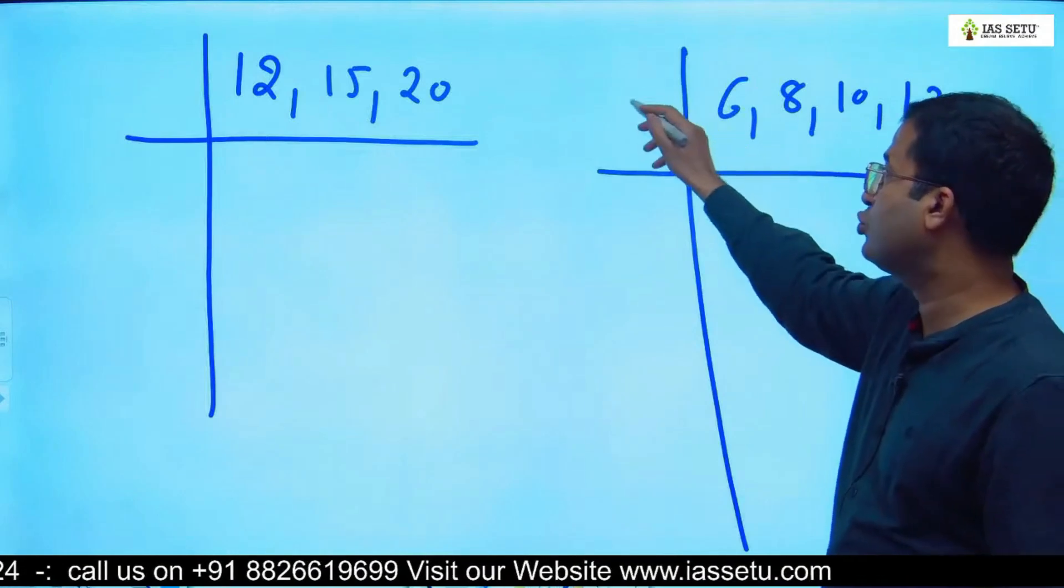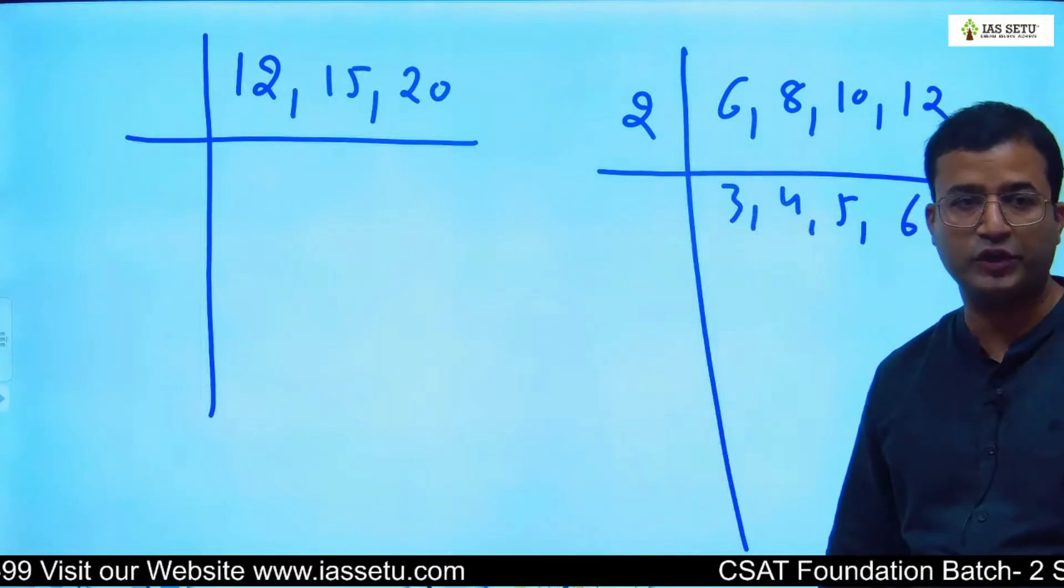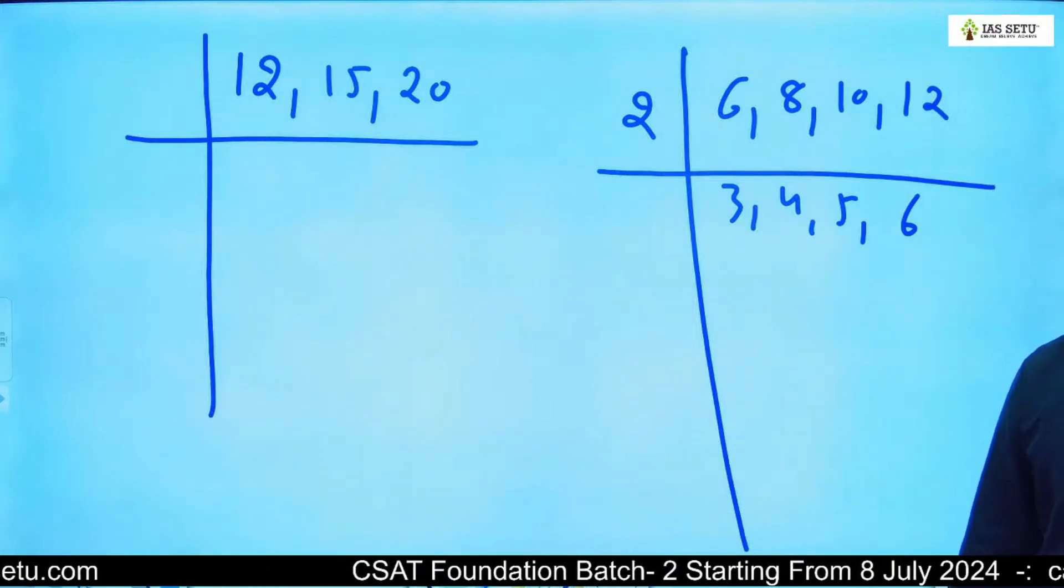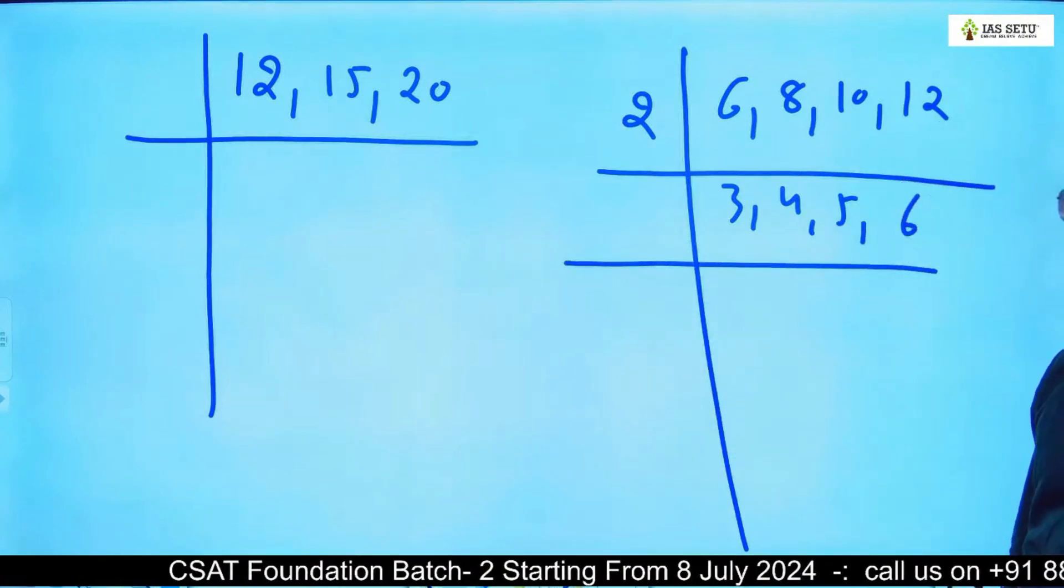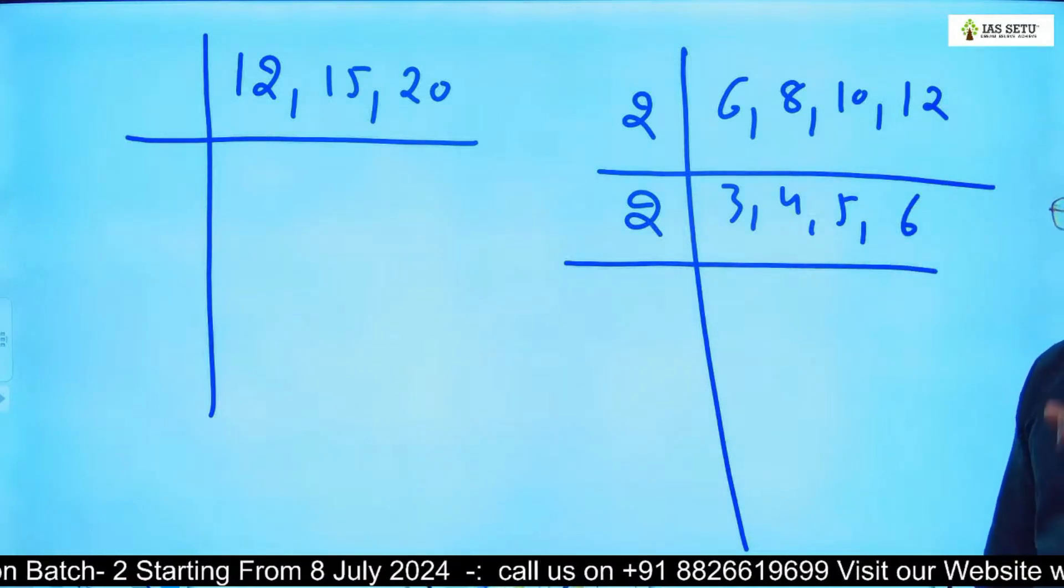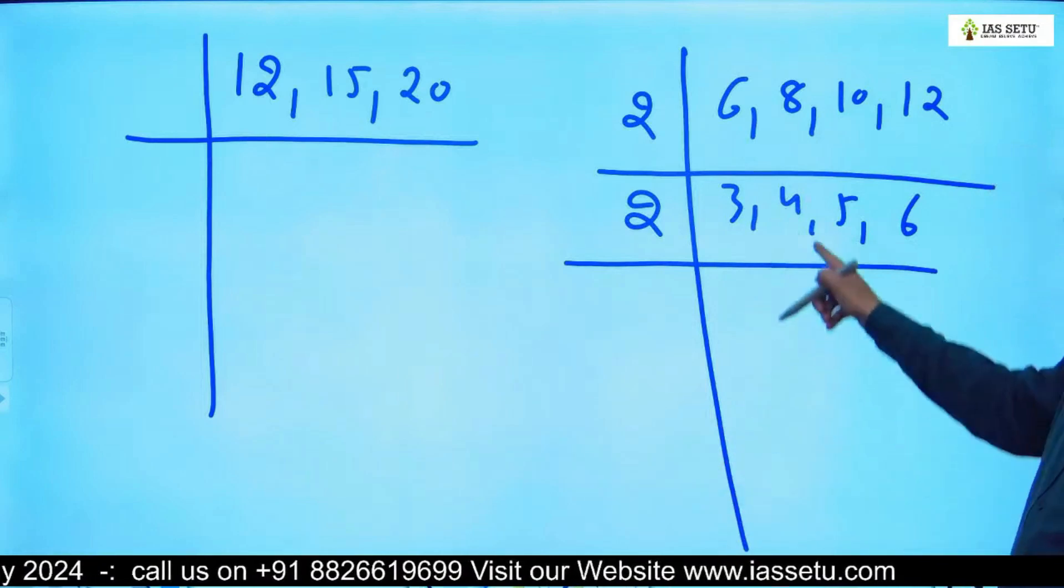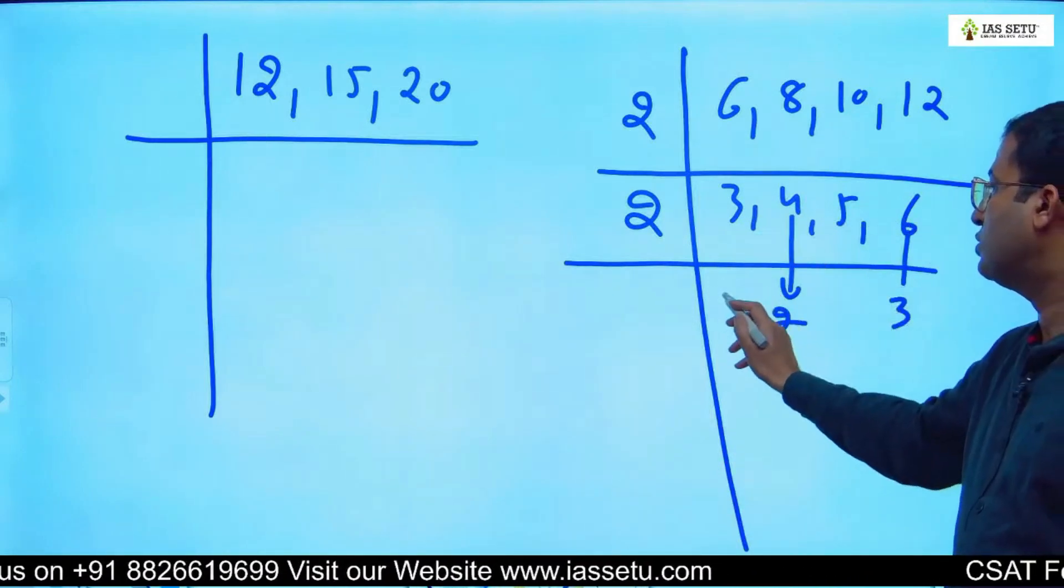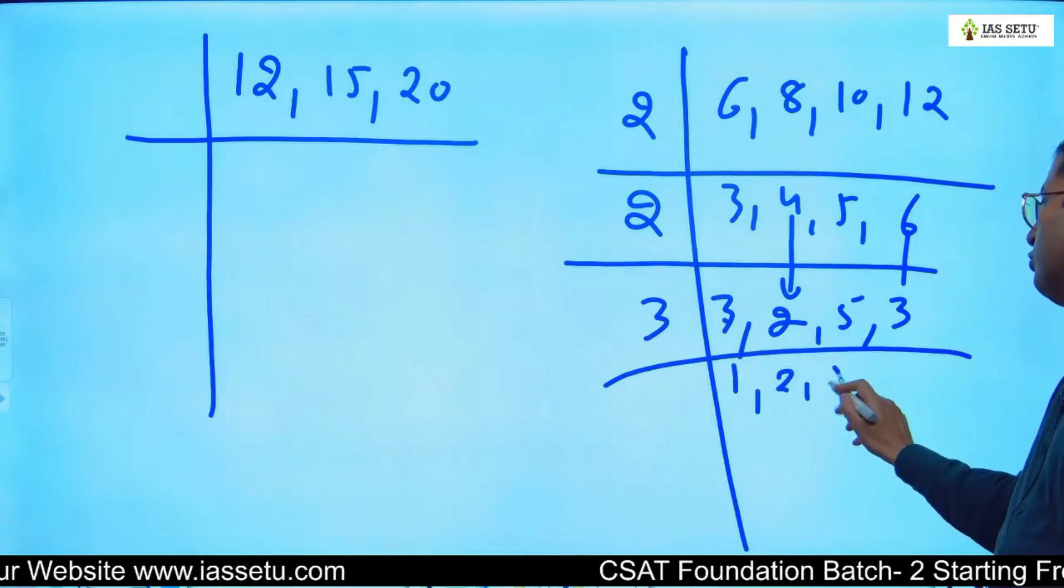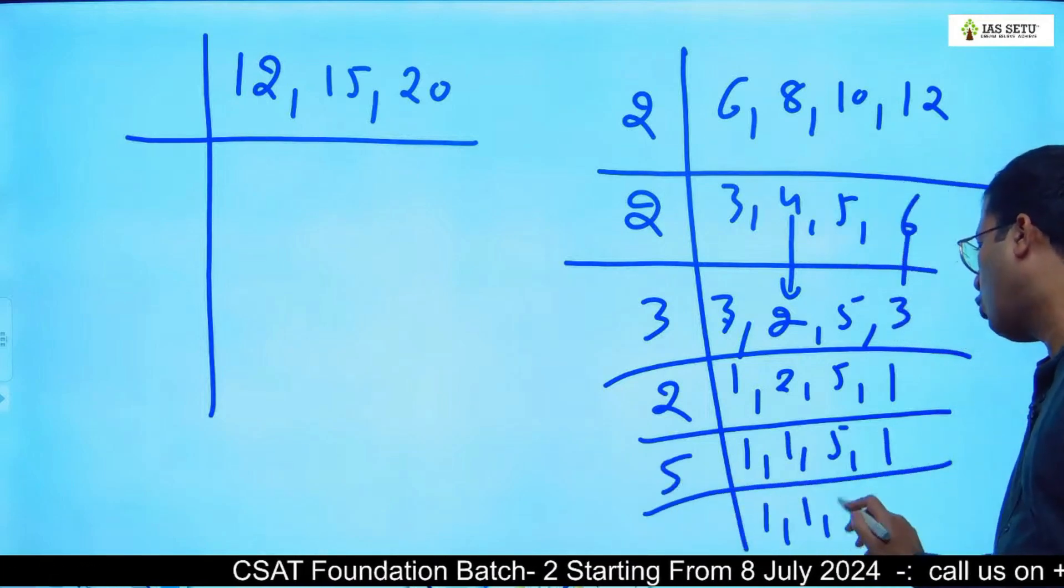First preference is if we have 3 or more numbers, our first priority is common from all the numbers. Since 2 is common, we take 2 common: 6, 4, 5. After that 3 and 4 are co-prime, we don't have common factors. If it's not common from all numbers, if it's common from 2 or 3 numbers, still we take it. Like here, 4 and 6 are even numbers, so you can take 2 common from 4 and 6: 3, 2, 5. Then take 3 common: 1, 2, 5. Then take 2 common: 1, 1, 5. Take 5 also common so all numbers become 1.